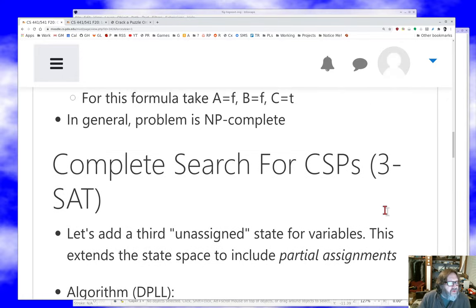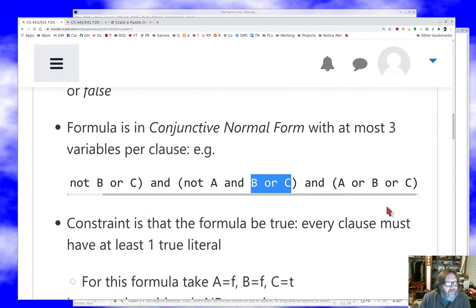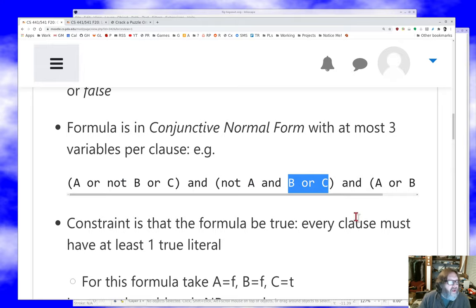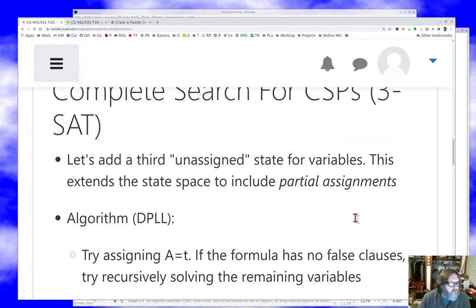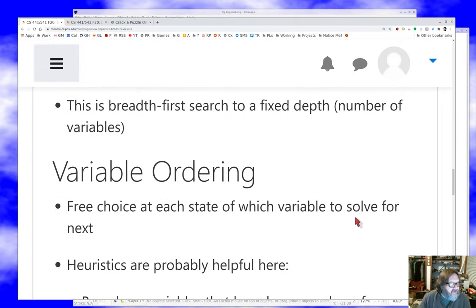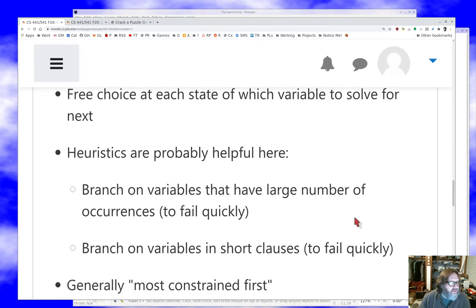Now, it may occur to you, looking at our demo problem here, that it matters what order you take the variables. If, in this case, we were to start by valuing C first, we could value C to true, and we'd be done. We wouldn't have to think about A or B at all. That's absolutely right. So one of the things we need to do is think about what heuristics to use.